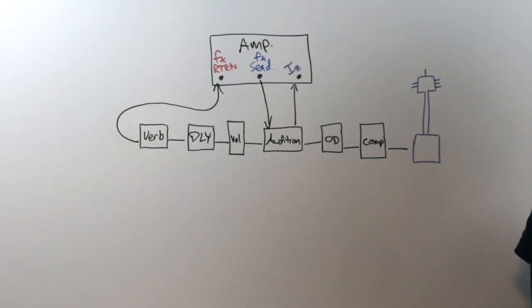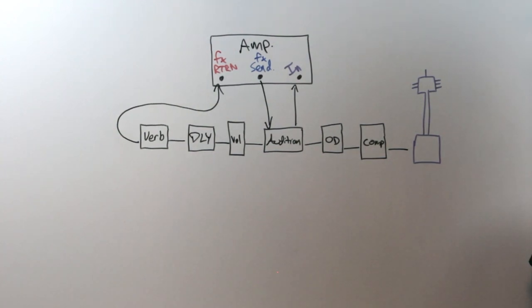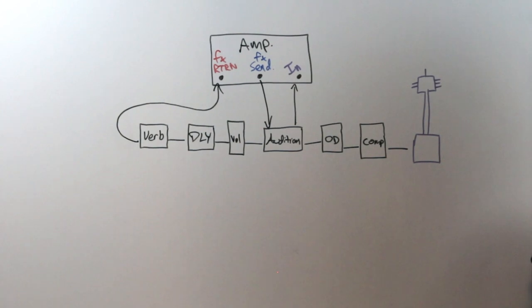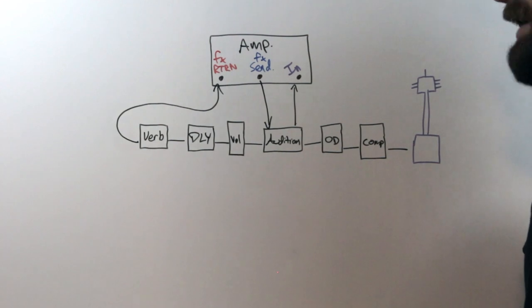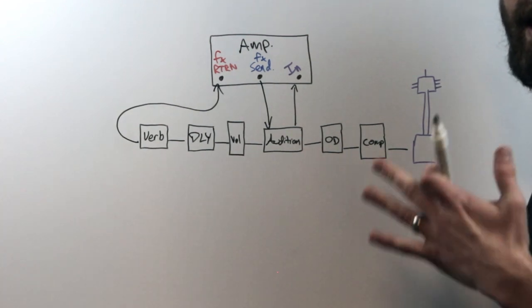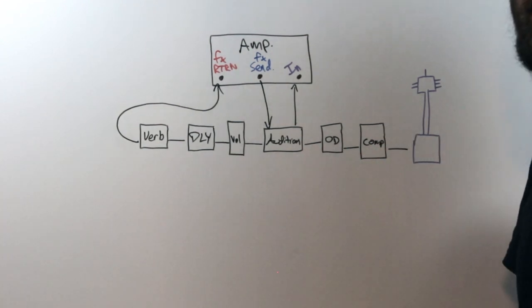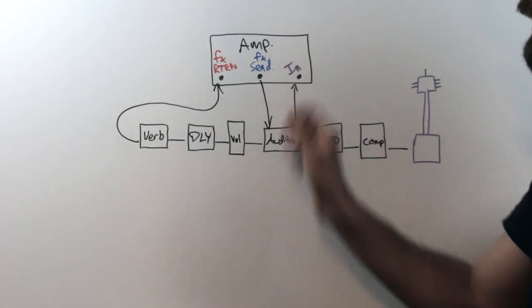So now what you can hear is those repeats of that delay are now all equally overdriven as they decrease in volume. It's not changing the characteristics of that effects loop.